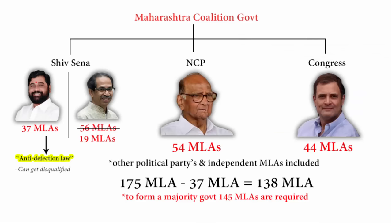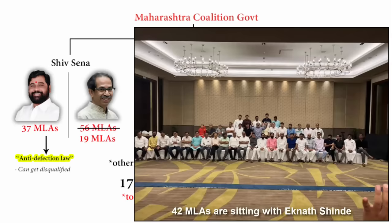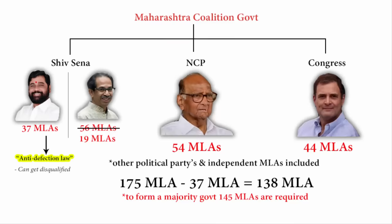More MLAs are now joining Eknath Shinde. The count has gone from 37 to 42 MLAs sitting together with him, and more independent MLAs have also extended their support. He is easily way ahead of the two-thirds mark required to bypass the Anti-Defection Law, and Uddhav Thackeray has been reduced to a minority within his own party.